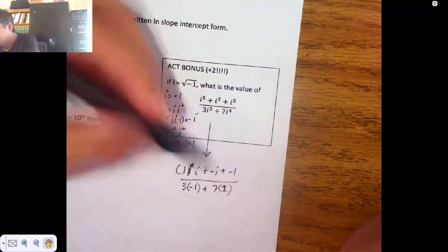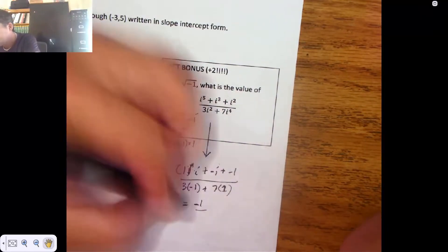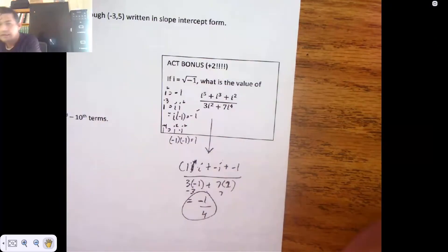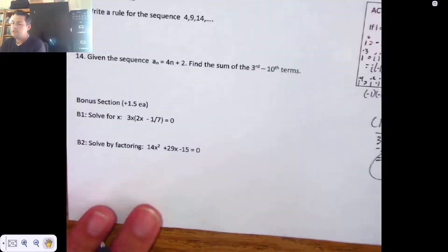So I have I minus I. They're gone. This is negative three. That's seven. Put them together. You get a four. Negative one quarter. All right. Bonuses. Bonus one. Bonus two.